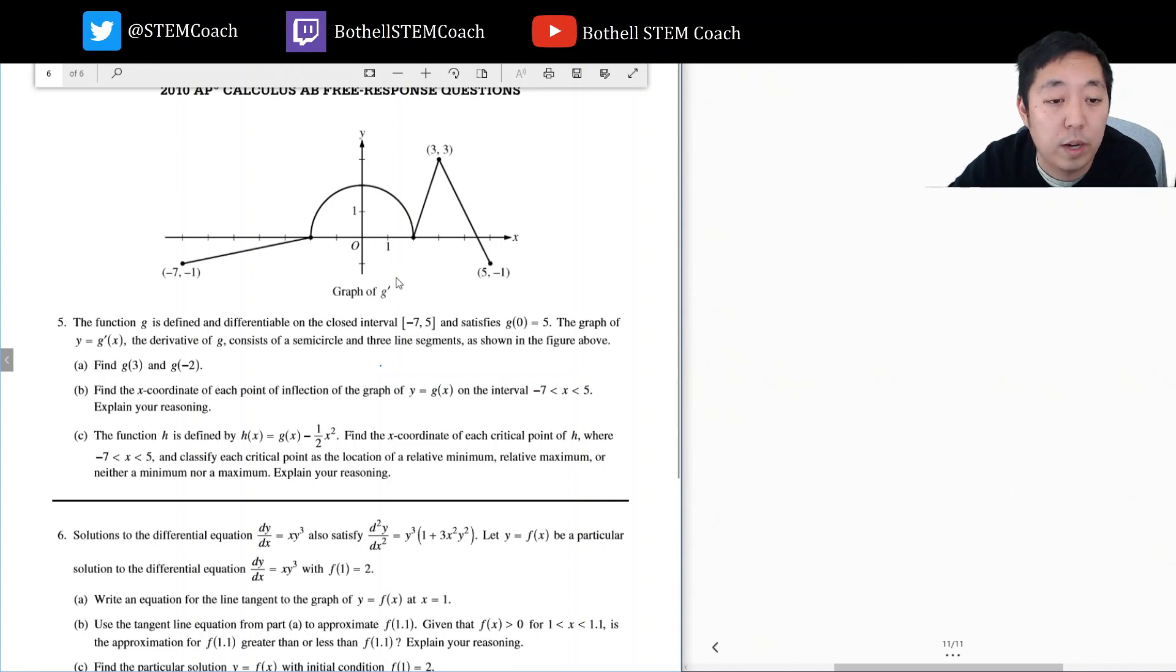So I have a graph of g prime. How do I relate g and g prime? g of three is an integral from something to three of g prime of x. How do I decide what this something is? Well, it depends on what I know. I know zero, so I'm going to use zero and say it's the integral from zero to three of g prime of x plus g of zero. This is from the fundamental theorem of calculus because this integral is g of three minus g of zero.